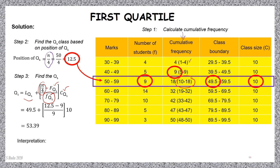How to interpret using the Q1 concept: 25% of students scored less than 53.39 marks, and the other 75% scored more than 53.39 marks.